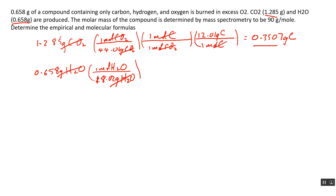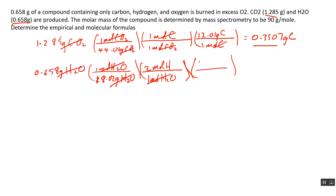It's important to remember that the ratio of moles of water to moles of hydrogen is one mole of H₂O for every two moles of hydrogen. Then we convert using the molar mass of hydrogen: 1.008 grams per one mole of hydrogen. When I did this calculation, I got 0.07361 grams of hydrogen.